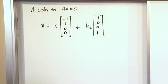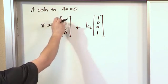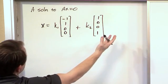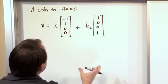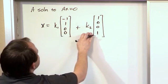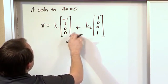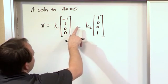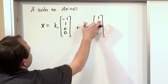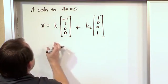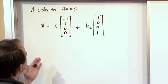What this means is that obviously x can be zero here. That's a trivial solution. The non-trivial part of the solution is the following: I can choose any two numbers for K1 and K2. For instance, if I choose K1 = 1 and K2 = 1, then this vector plus this vector, the linear combination, that would be a valid solution for x.